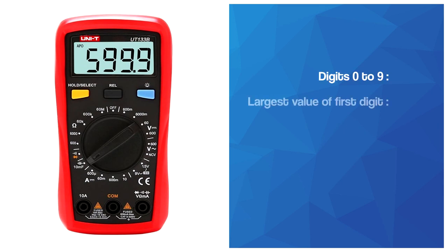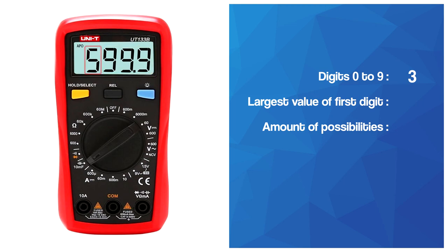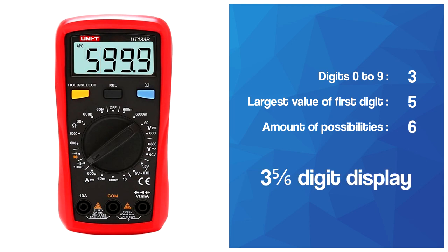Let's take another example. This screen shows three digits that can go from zero to nine and one digit that has a maximum value of five, which means six possibilities. So this screen is a three 5/6 display.